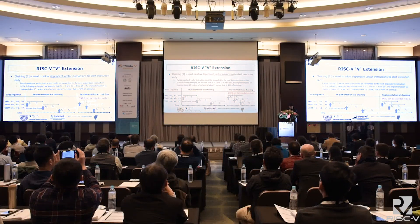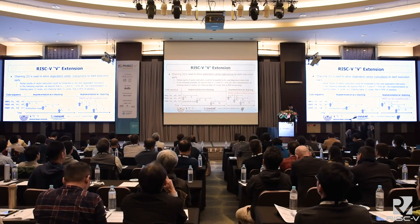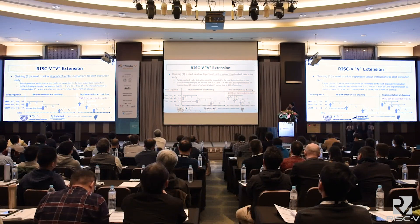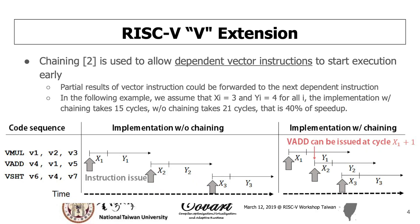For example, this is the same code sequence as the previous slide. On the right side, we use the chaining mechanism. So we can see after the first result of the vector multiply is completed, which is at cycle X1 plus 1, we can issue the vector add instruction at this cycle because the result can be forwarded from the vector multiply to the vector add. In the following example, assuming X of i is 3 and Y of i is 4 for all i, the implementation with chaining takes 15 cycles and without chaining takes 21 cycles — that is a 40% speedup.